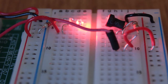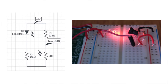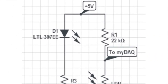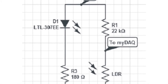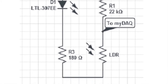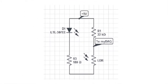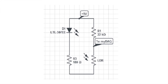The circuit used for this project was quite simple. A red LED was powered by 5V from the MyDAQ's digital output line. This was placed in parallel with a light-dependent resistor and a 22kΩ resistor. 22kΩ was chosen because the signals from the LDR are incredibly small, and high amplification was required. The voltage from the LDR was written to the analog input of the MyDAQ.